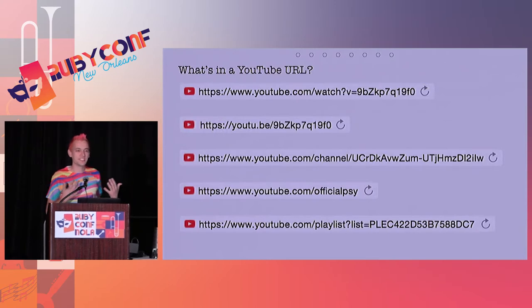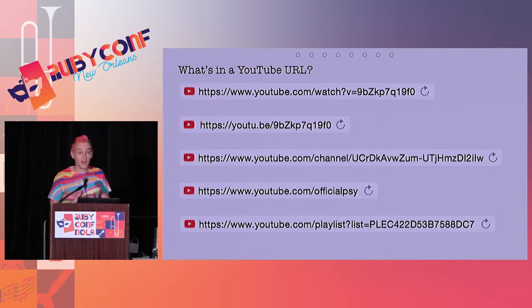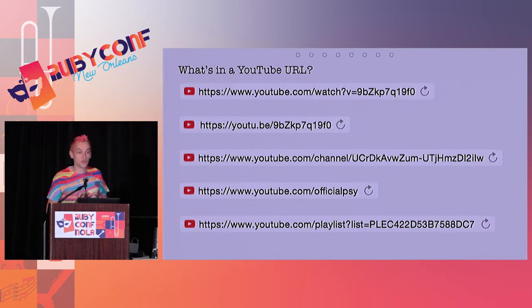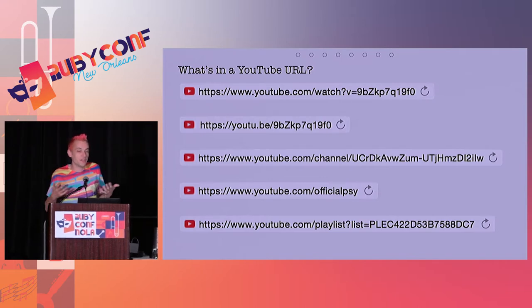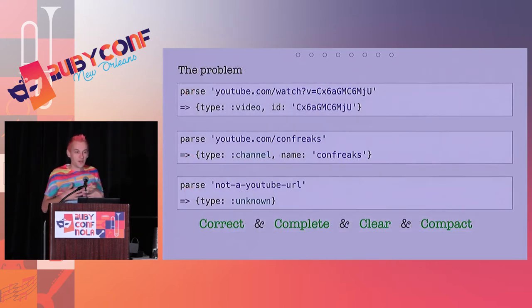Let me give you some context, because this is the example — the problem we're going to use to look at those methods. It has to do with YouTube URLs. In my previous job, I had to deal with YouTube URLs a lot. If you've ever watched a video on YouTube, you've probably seen a URL of the first type. The second URL is also a YouTube video, just a shorter format. The third and fourth are URLs for YouTube channels, and the last one is for a YouTube playlist.